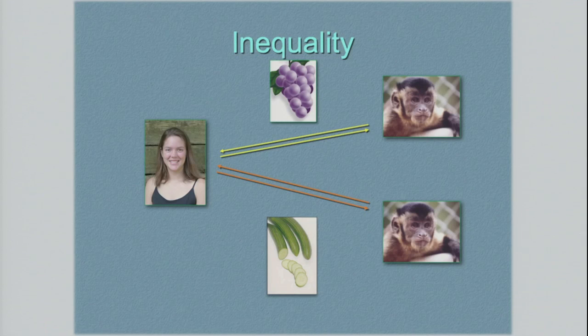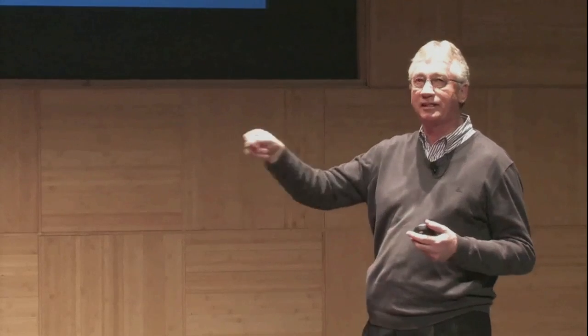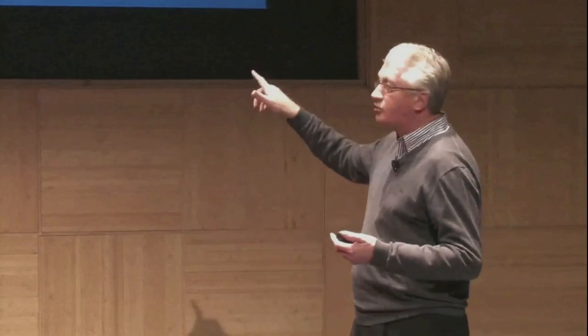Two capuchin monkeys are placed side by side — animals that live in a group and know each other. They are taken out of the group and put in a test chamber with a very simple task. If you give both of them cucumber for the task, they're perfectly willing to do this 25 times in a row. But if you give the partner grapes — a far better food — you create inequity between them.